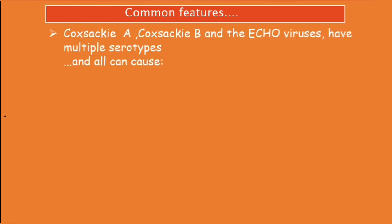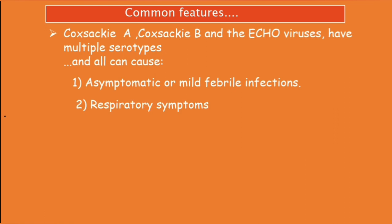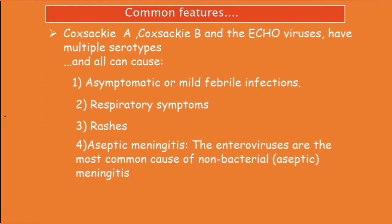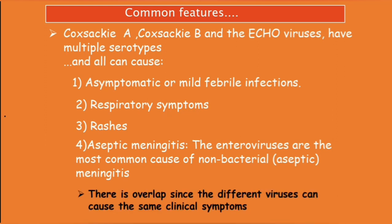Coxsackie A, coxsackie B, and the echoviruses have multiple serotypes and all of them can cause: number one, asymptomatic or mild febrile infections; number two, respiratory symptoms; number three, rashes; and number four, aseptic meningitis. Enteroviruses are the most common causes of non-bacterial or aseptic meningitis. Because of these common diseases, there is overlap since different viruses can cause the same clinical symptoms.